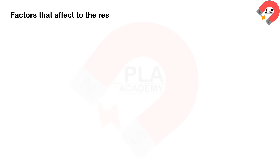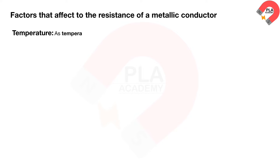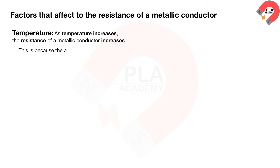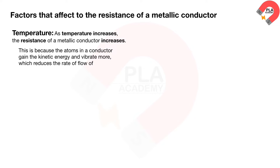Factors that affect the resistance of a metallic conductor. Temperature: as temperature increases, the resistance of a metallic conductor increases. This is because the atoms in a conductor gain kinetic energy and vibrate more, which reduces the rate of flow of charges. This causes the current to decrease and the resistance to increase.